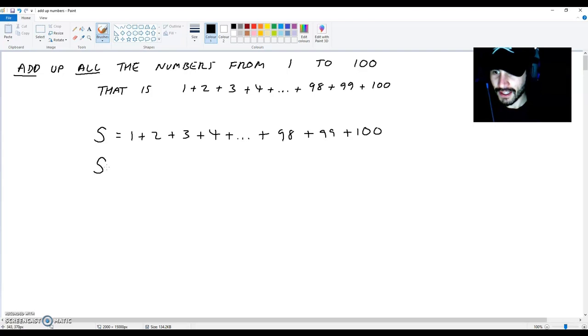And this is going to equal all the numbers from 1 to 100 but in reverse. So, what we are going to have is 100 plus 99 plus 98 plus 97 plus dot dot dot plus 3 plus 2 plus 1. As you can see, both of these S's over here are equivalent. The only difference is one of the sequences is in reverse.